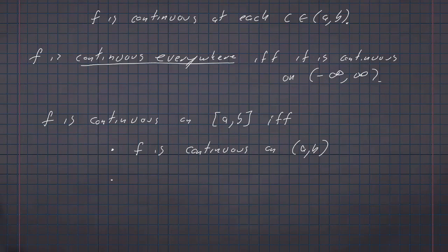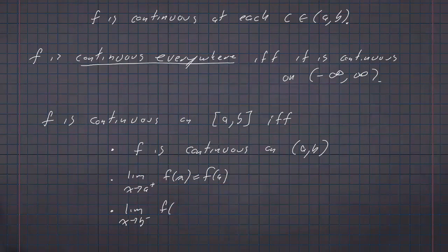We're going to insist that f is continuous on the open interval — so on every c in the open interval from a to b. And at point a, we're going to insist that the limit as x approaches a from the right of f of x is equal to f of a. From the left, we don't care because the left is outside the interval. And the opposite on the other endpoint: the limit as x approaches b from the left, approaching from within the interval, but not from the right, which would be outside the interval.